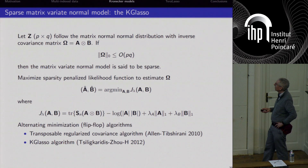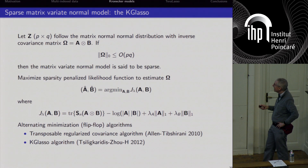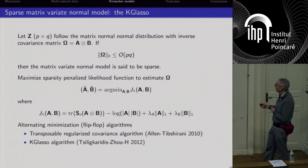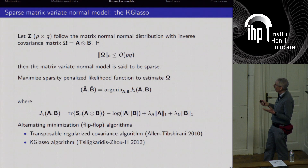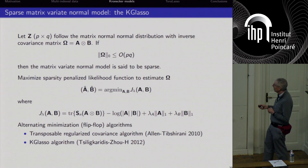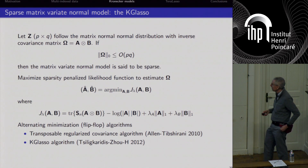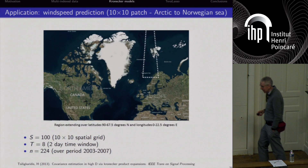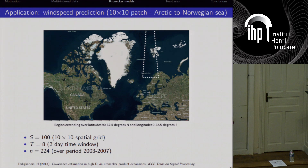The sparse matrix variate normal model simply replaces omega in the negative log likelihood with A Kronecker B, with sparsity penalties on A and B. This can be minimized, but it's not convex — it's bilinear, so fixing B makes it convex in A and vice versa, but not jointly convex. This leads to the KG Lasso algorithm.